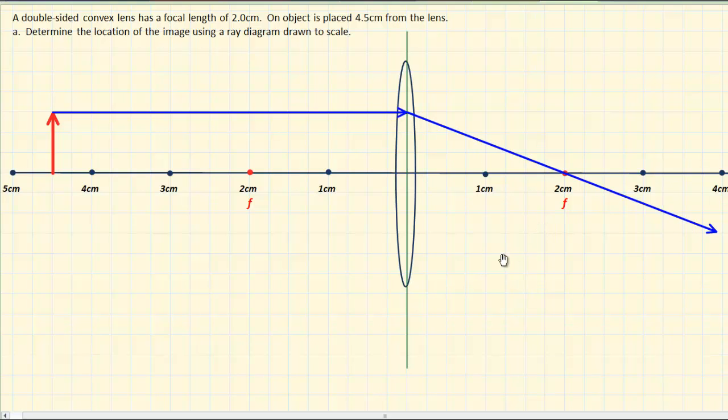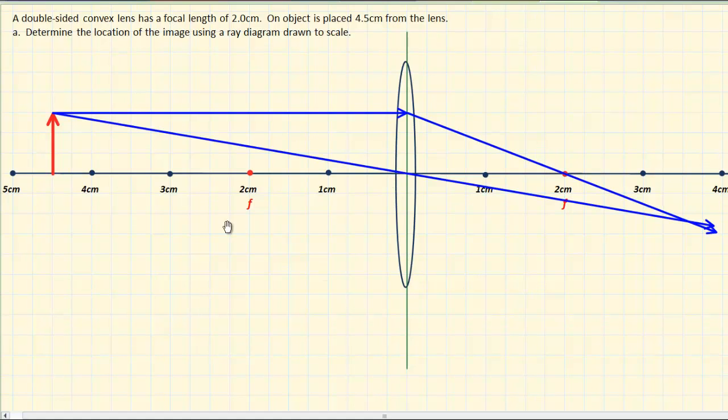Now our second ray for lenses is dead simple. Any ray that goes through the center, the dead center of the lens, where this vertical green line and our principal axis meet, passes through the lens unimpeded. So it'll go in a straight line. Let's draw that one now. So here's our second ray. Straight through the dead center of the lens, undeflected. And you can see that these two rays cross on the right at this point where my hand is. A little bit greater than 3.5. So that's going to be the location of our image.